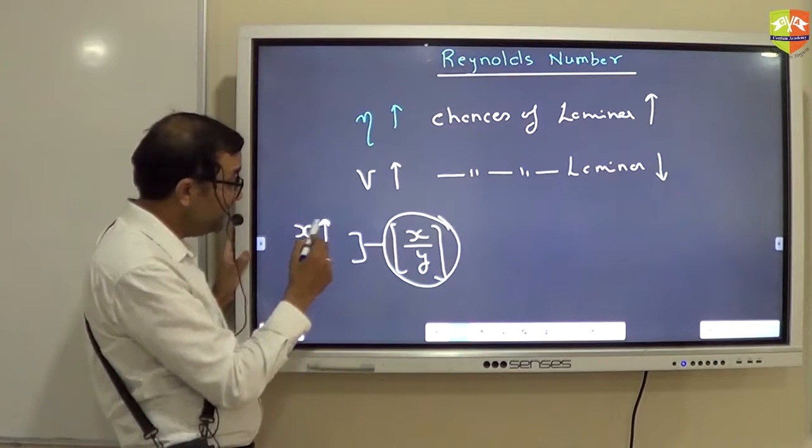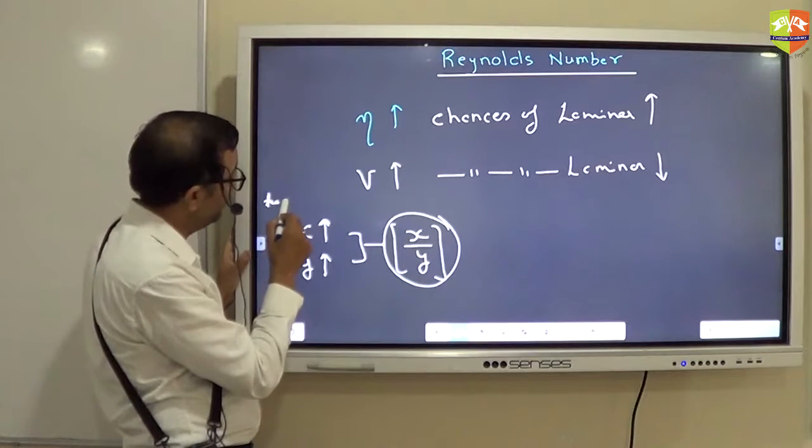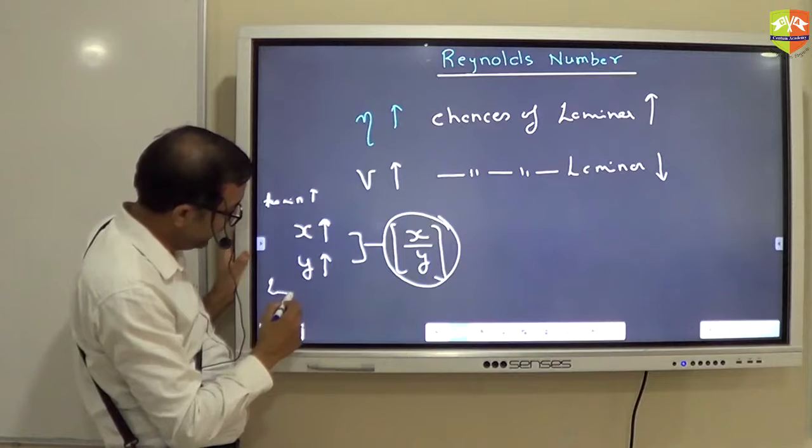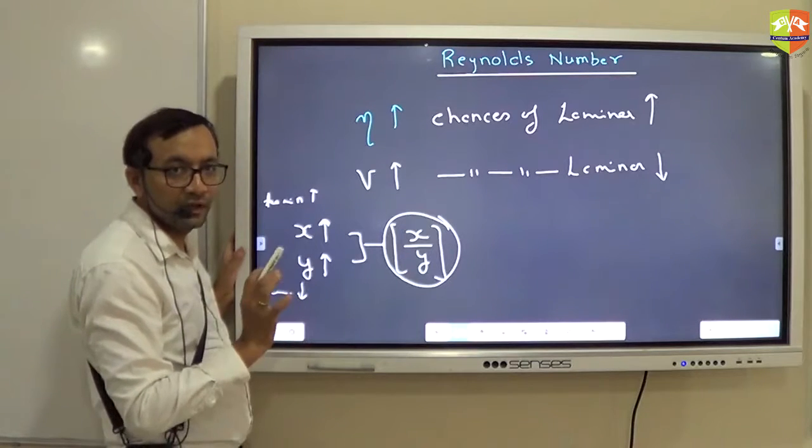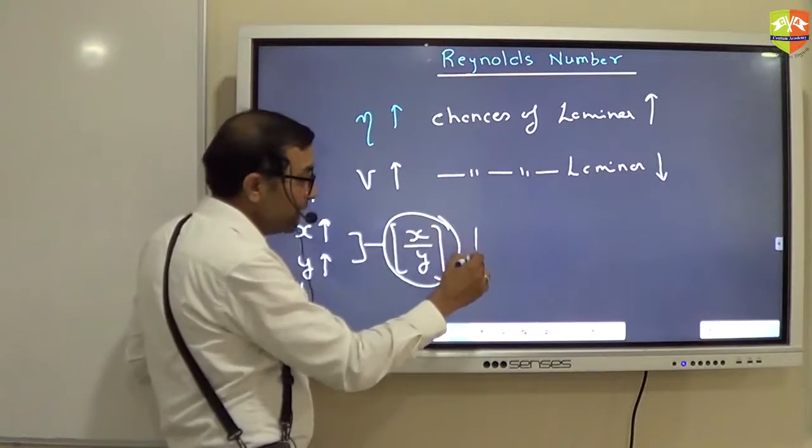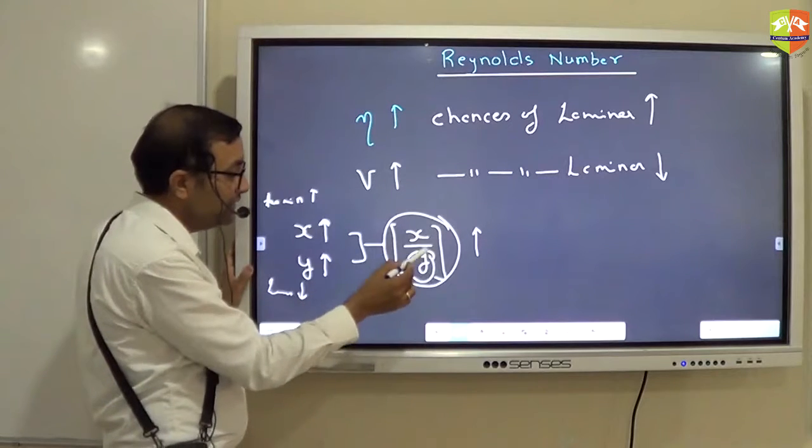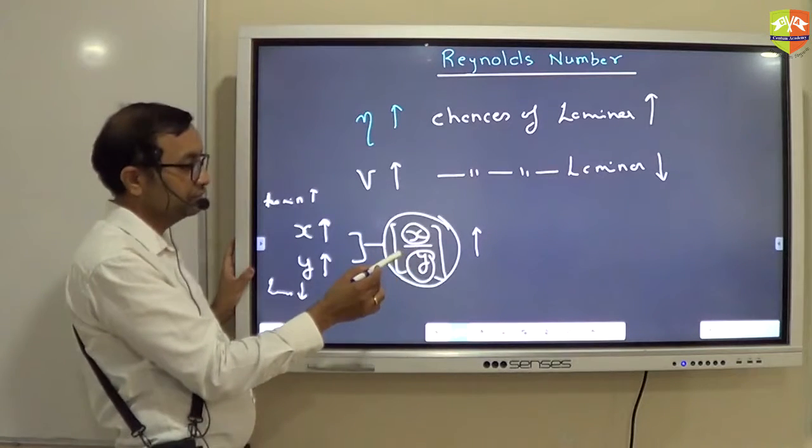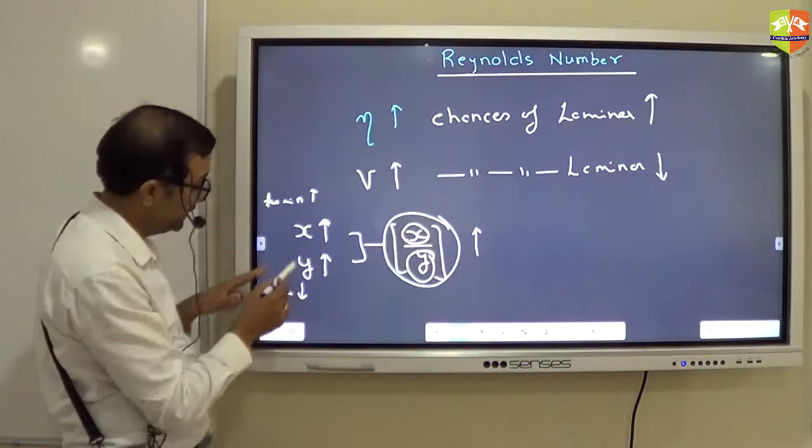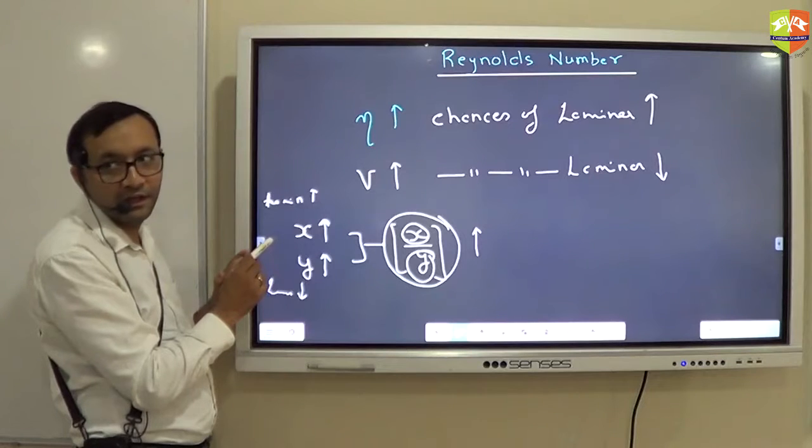You understand what I am trying to say? And if x increases, chances of laminar increases. If y increases, chances of laminar decreases. So I define x by y as some parameter. Now if x by y increases, it automatically tells us that y is decreasing and x is increasing. So satisfied both cases?